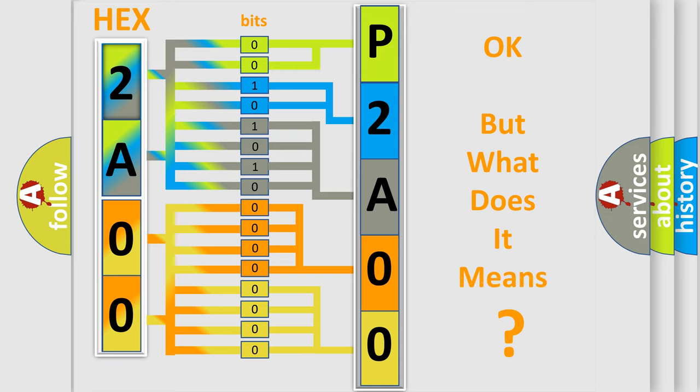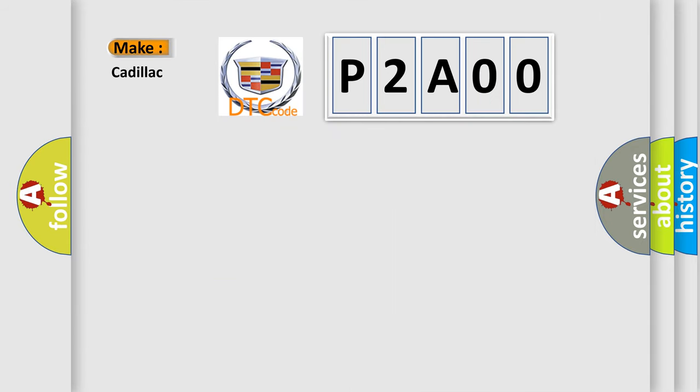The number itself does not make sense to us if we cannot assign information about what it actually expresses. So, what does the diagnostic trouble code P2A00 interpret specifically for Cadillac car manufacturers?